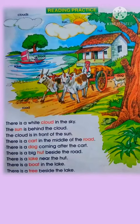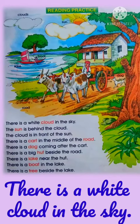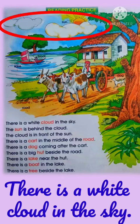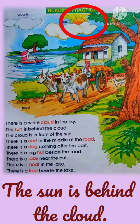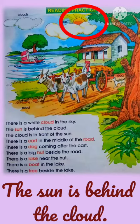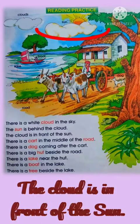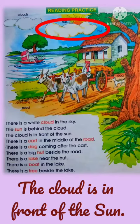The first sentence is: There is a white cloud in the sky. The sun is behind the cloud. The cloud is in front of the sun.